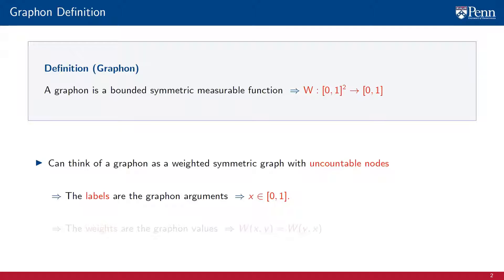The labels of the nodes are the arguments of the graphon function, that is, the values that x can take in the unit interval. The weights of the edges are the graphon values, the value w(x,y) that the graphon function takes. Observe that since the function is symmetric, w(x,y) is the same as w(y,x) for node labels x and y.